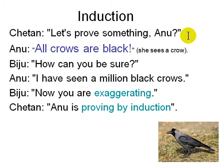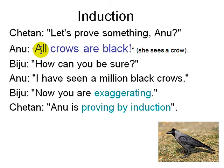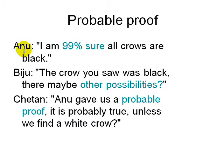The most common example given is proof by induction. Anu says all crows are black, and you see a crow. Chetan asks: how can you be sure? Anu says she has seen a million crows, all black — but does that mean all crows are black? The word 'all' means it's independent of the number of crows seen, past, present, in every possible world. Anu modifies it: 'I am 99% sure all crows are black.' This is a probable proof — probably true unless we find a white crow.